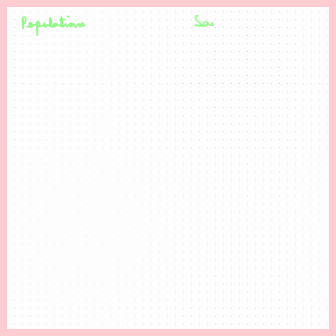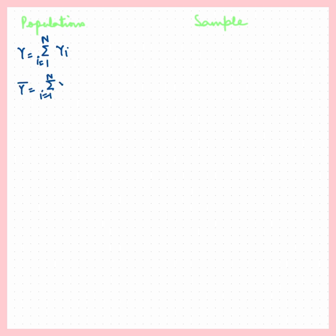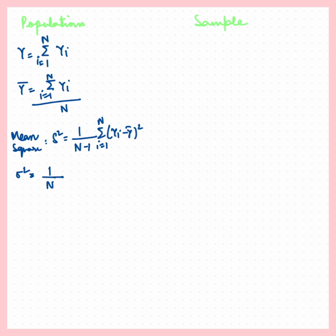Now we will understand some population and sample features. Capital Y is the sum of all the units in the population, and Y-bar is the mean of all the units in the population. The mean square S² is represented as (1/(n−1)) × Σ(yᵢ − ȳ)². Sigma squared σ² is (1/N) × Σᵢ₌₁ᴺ (Yᵢ − Ȳ)².